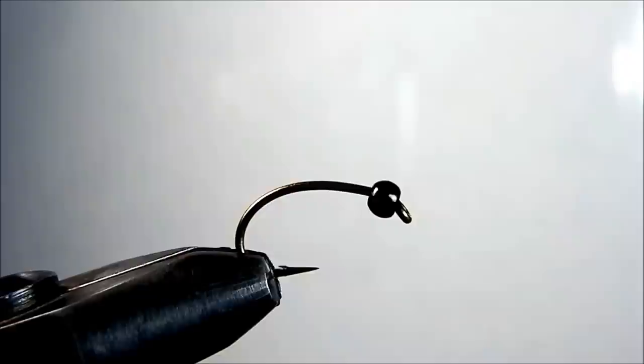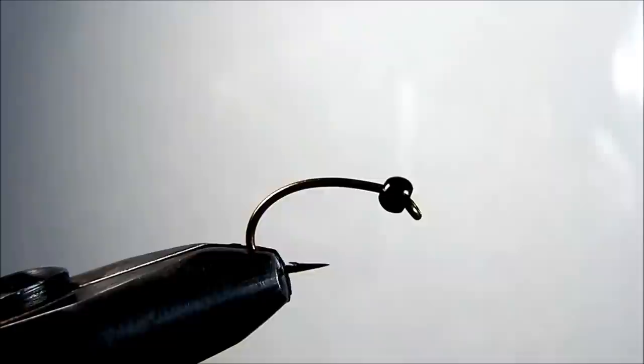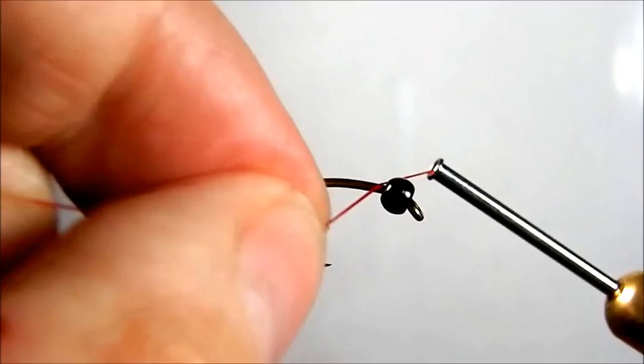I put my tungsten beads on backwards for three reasons. First of all, it lets it sit further forward on the hook shank. Second of all, it makes it much easier to build a thread dam behind the bead.